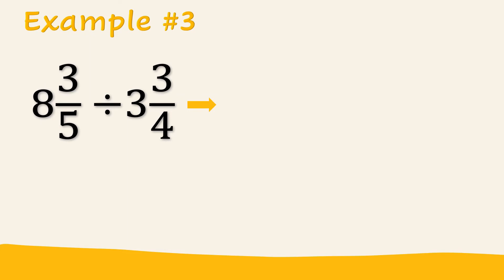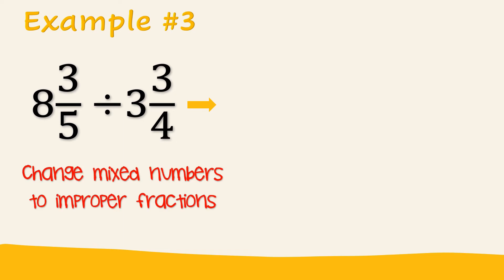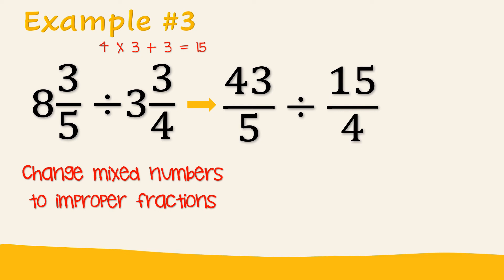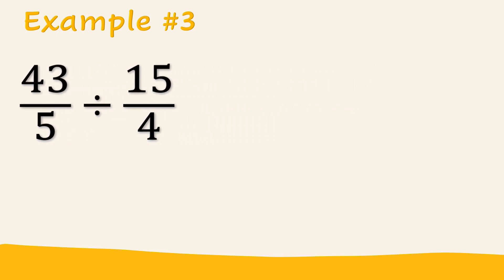We have 8 and 3 fifths divided by 3 and 3 fourths. First, change both mixed numbers to improper fractions. 8 times 5 plus 3 gives us 43. And 4 times 3 plus 3 gives us 15. So we have improper fractions of 43 over 5, divided by 15 over 4. We will now proceed with the next step.